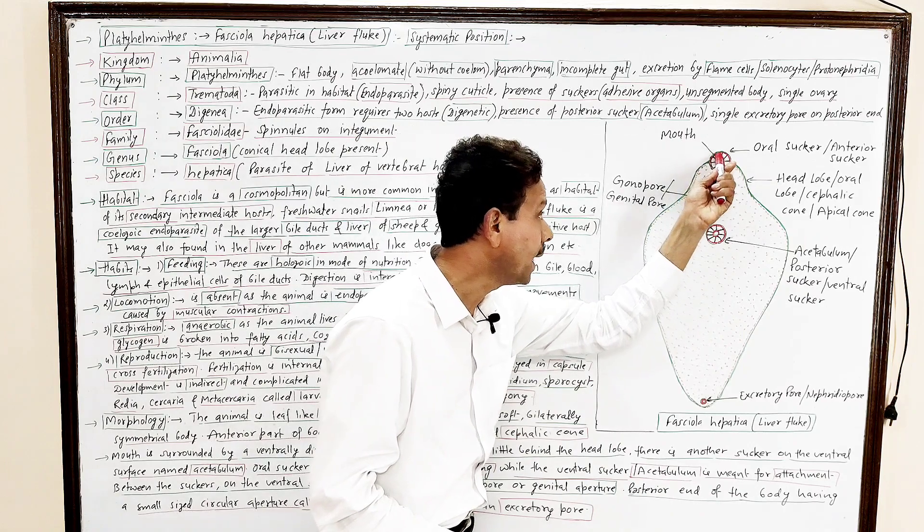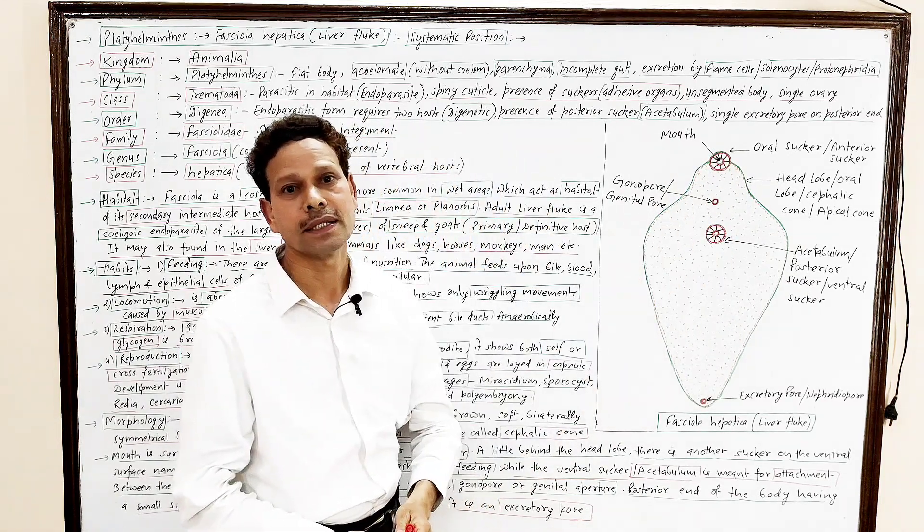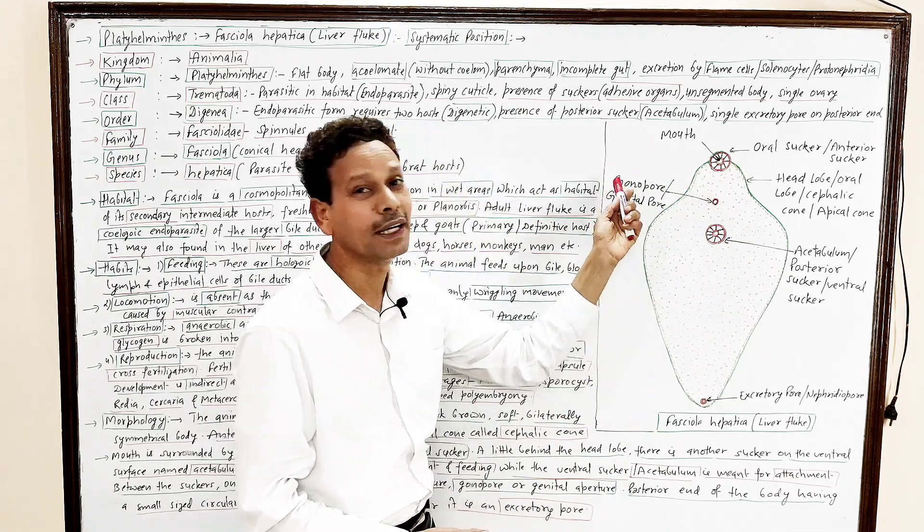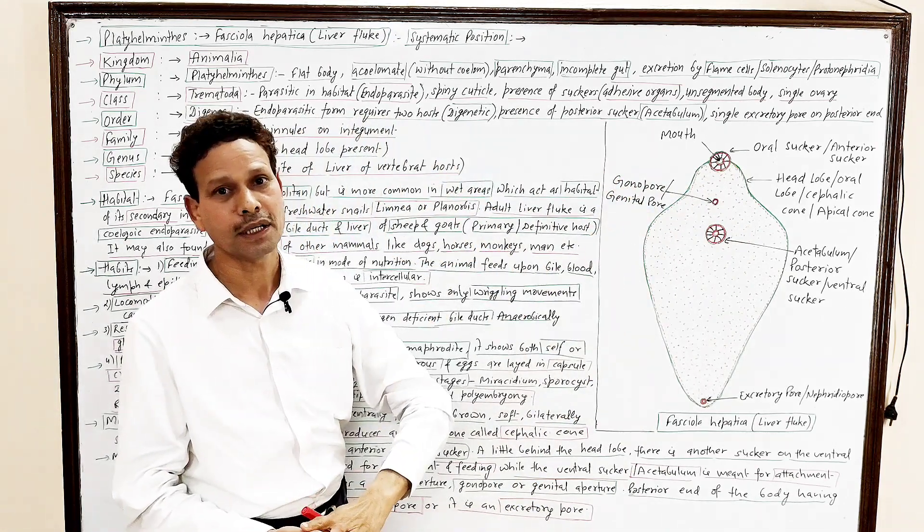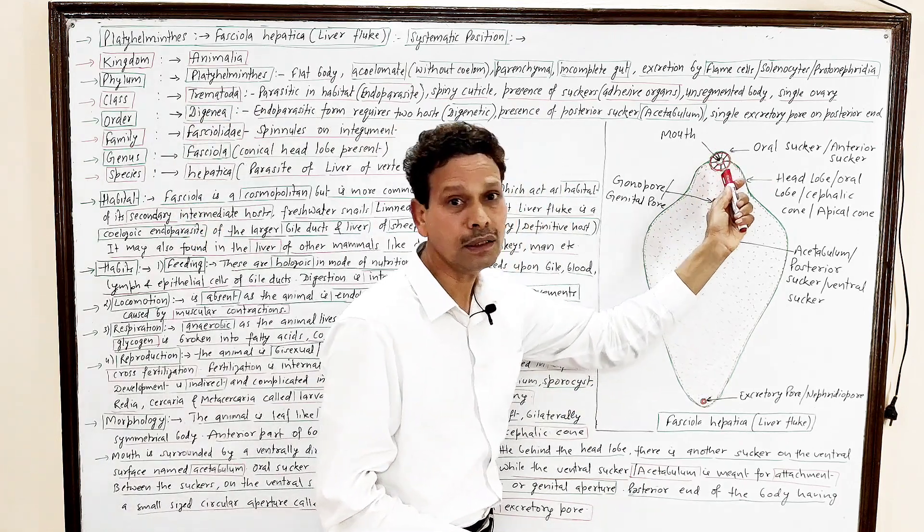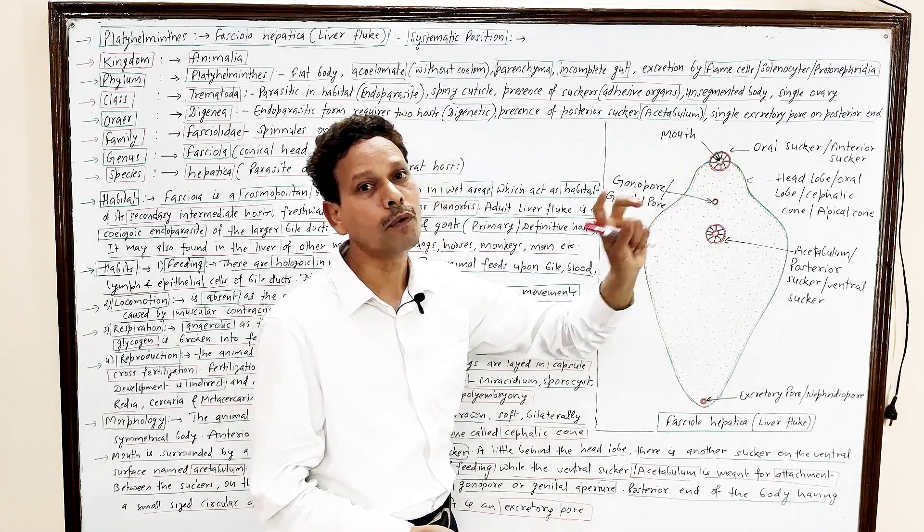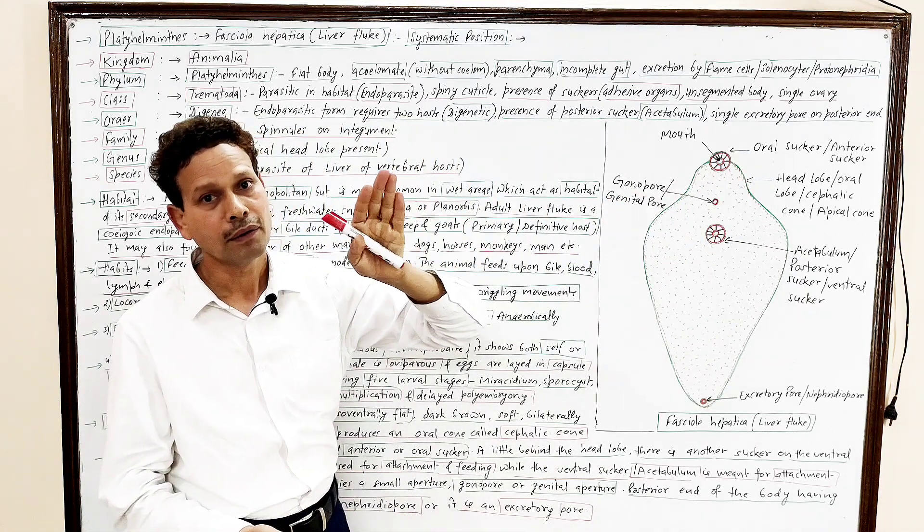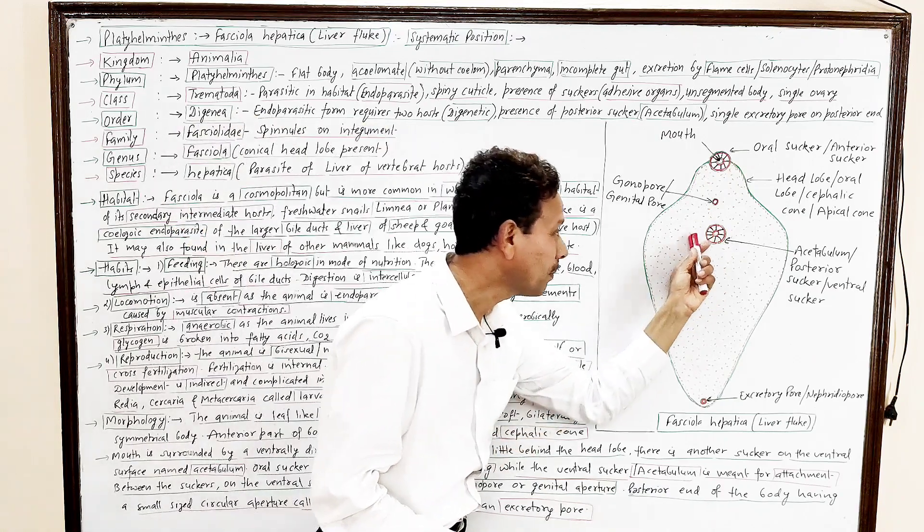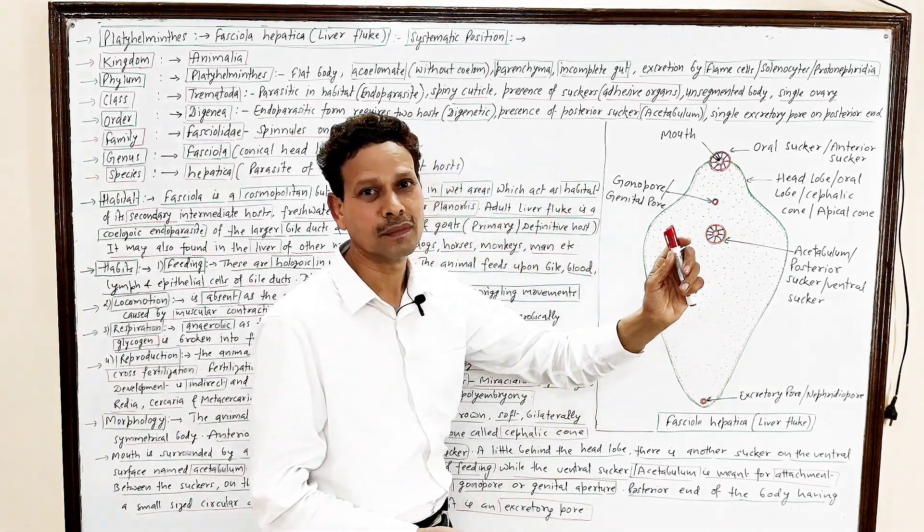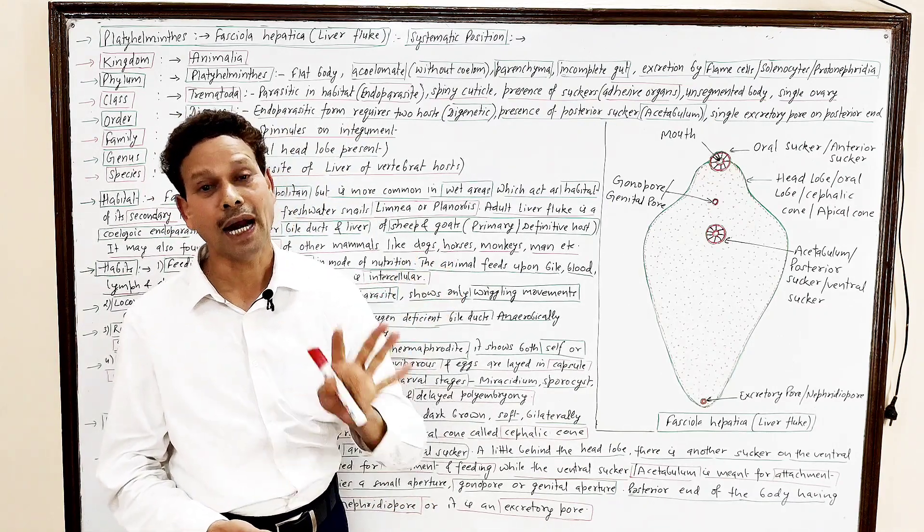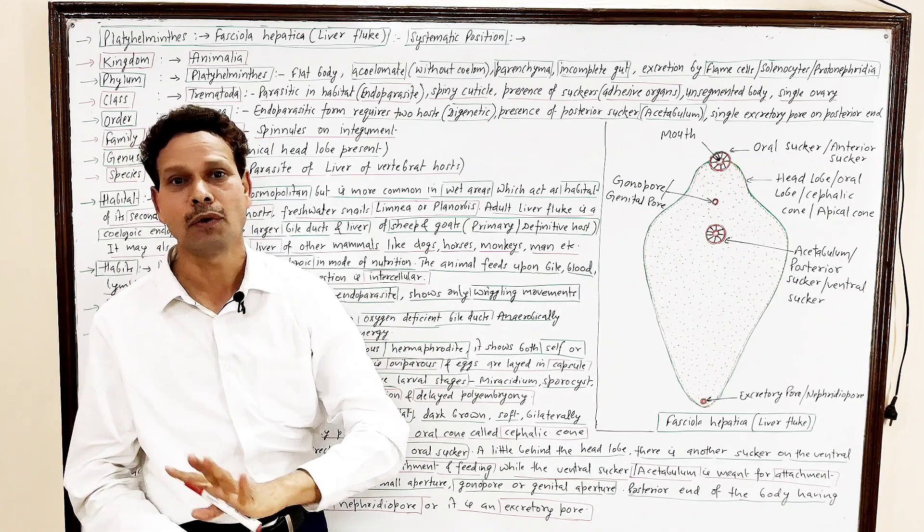Between this anterior and posterior suckers, there is a common aperture, and this common aperture, it is genital aperture, it is gonopore. This oral sucker, it involves attachment, fixation of body, and feeding. But this, particularly, acetabulum, strictly meant for fixation, attachment. It is adhesive organ.